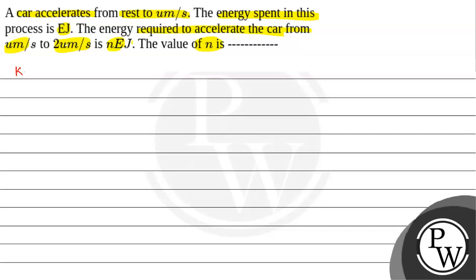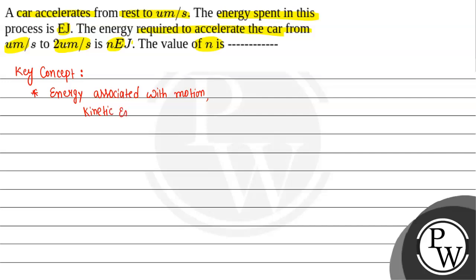Let's see the key concept we will use here to solve this question. The energy associated with motion is basically the kinetic energy, and this kinetic energy is given by half of m times V squared.